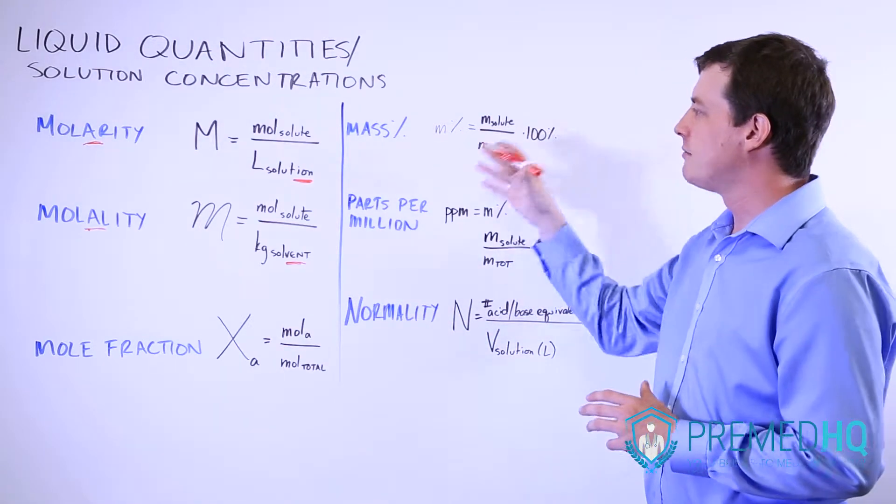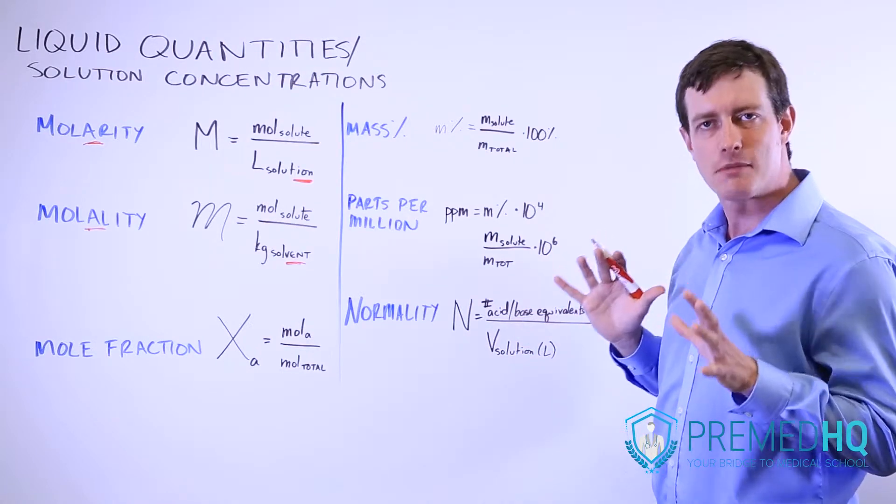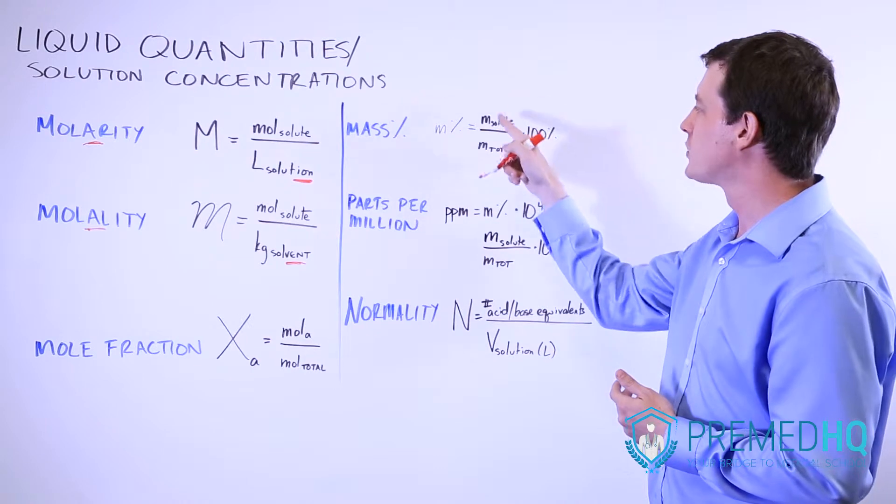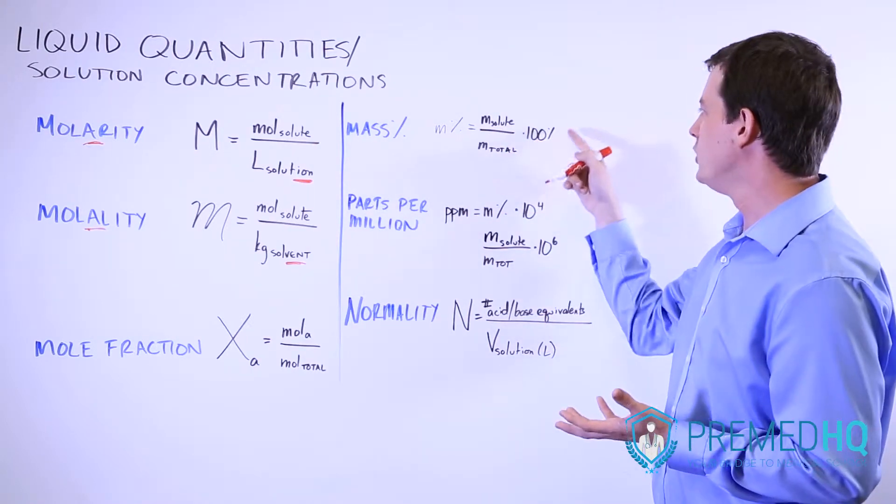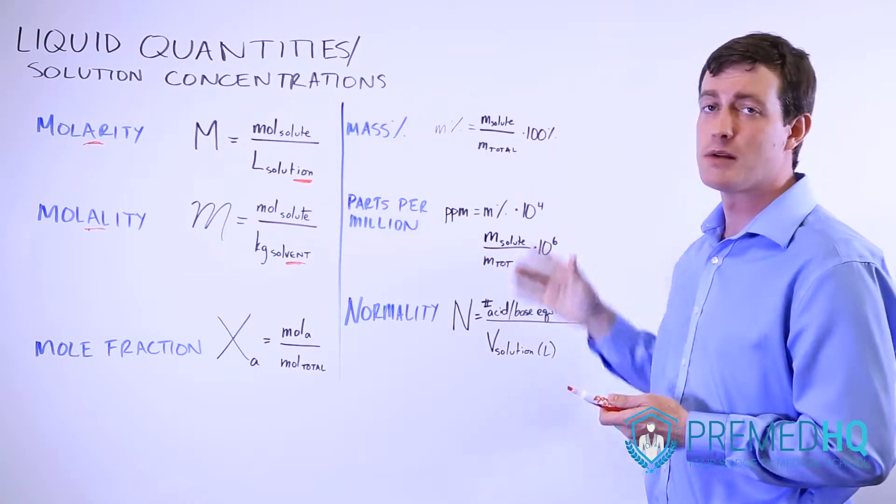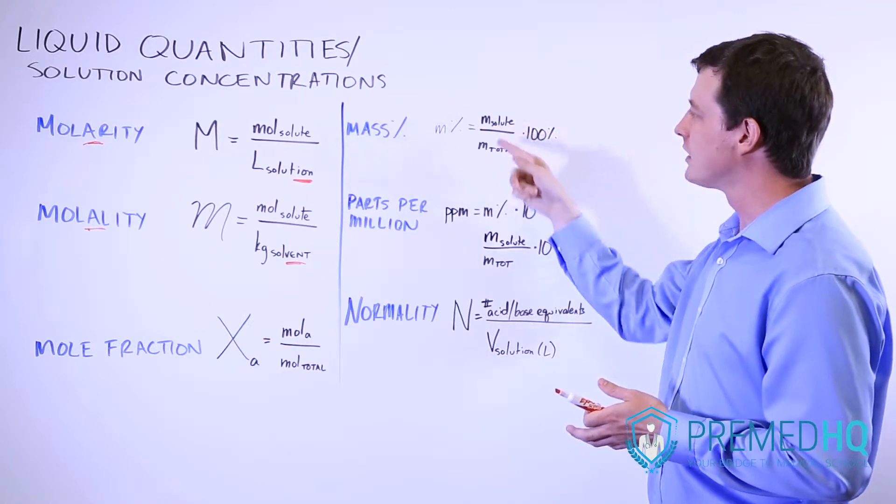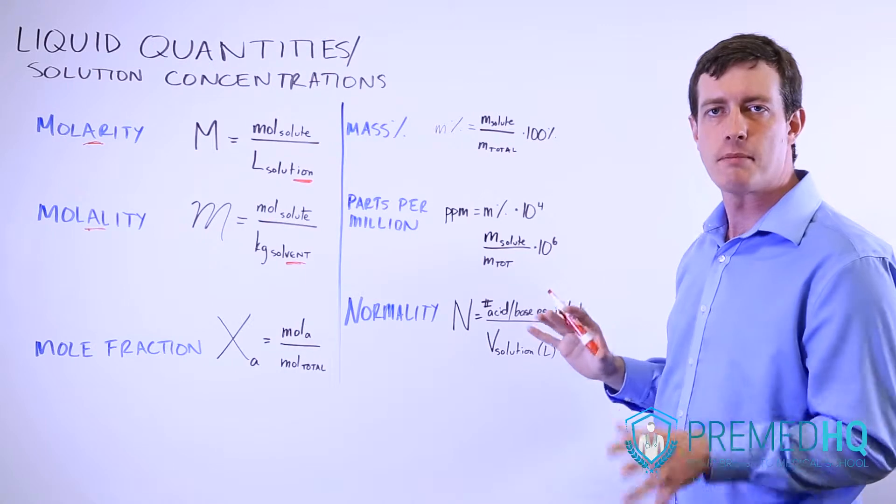Then we move on to the mass-based measurements. Mass percentage is fairly straightforward, it is the percent by mass of a material. You look at the mass of your solute divided by the total mass and you multiply that by 100 percent. A lot of times you'll see this in kilograms, but you'll also see this in grams and other units. As long as the units are the same for the two masses, then it's simple to calculate a mass percentage.